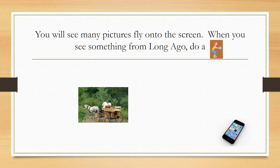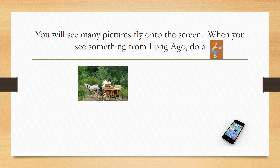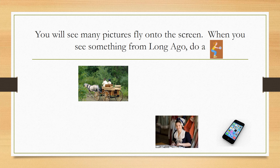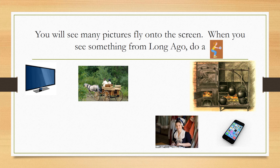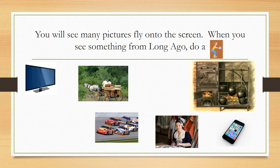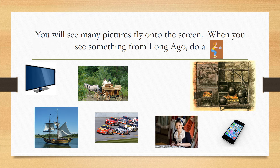You should be standing. Transportation from long ago — you should have done a squat. Clothing from long ago — you should have done another squat. A television — you should just be standing. A stove from long ago that didn't require electricity — you should have done another squat. Cars — you should just be standing. Transportation from long ago — you should have done another squat.